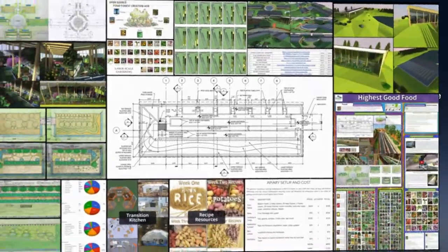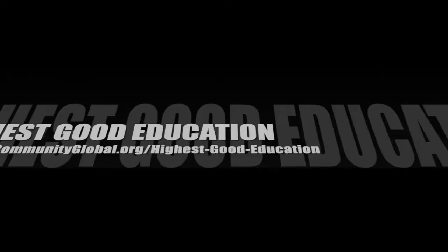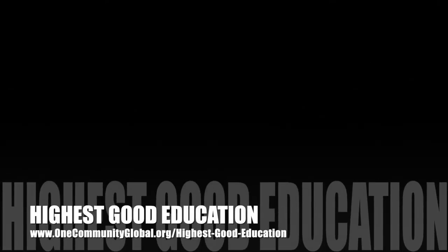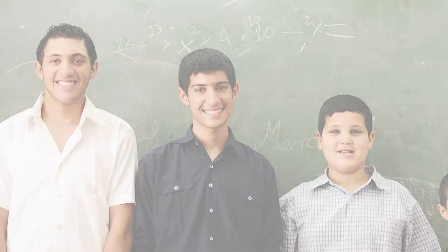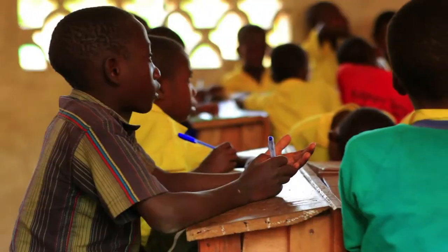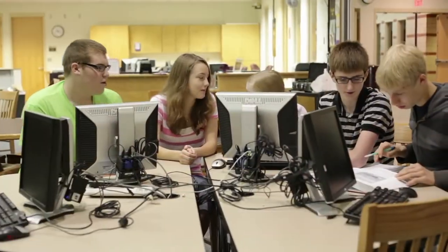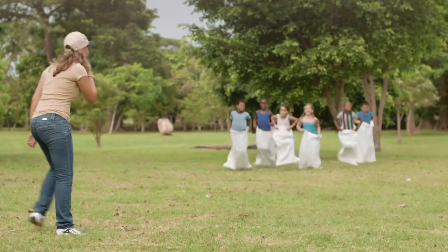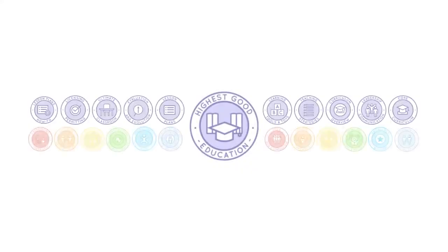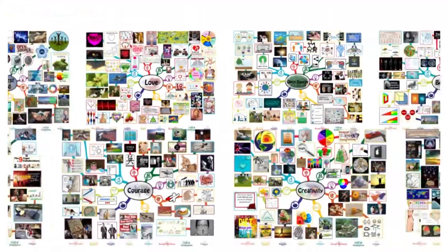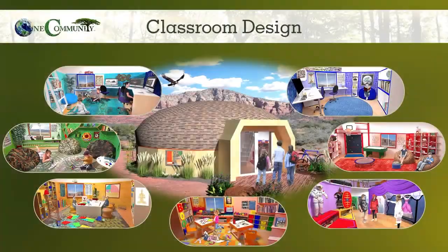The next component is highest good education. This component is complete and pretty much ready to launch once we're on the property. One Community's approach is designed for all age groups, adaptable to any schooling environment, inspiring and fun for all participants, and includes national standards, all subjects, lesson plans, teaching strategies, learning strategies and tools, classroom design, and more.